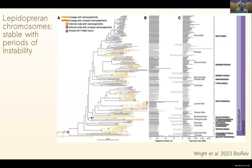Whereas others, shown in yellow, have experienced change. So in the lepidoptera there seems to be a punctuated situation where there is a lot of stability in chromosome structure, but then periods of change - sometimes dramatic change - and sometimes those periods of change end and the chromosome structure becomes stable again. Those are the kinds of groups we're going to be looking at today when thinking about the consequences of these changes.